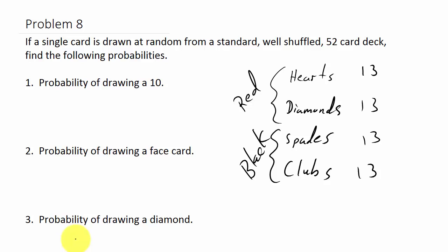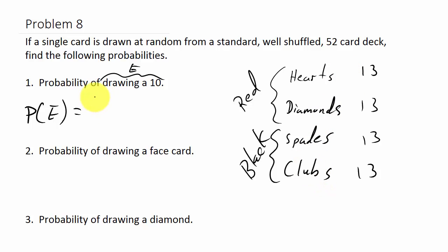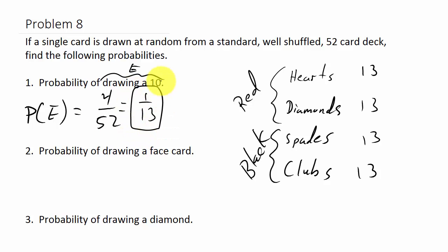What's the probability of drawing a 10? There are four tens (10 of hearts, 10 of diamonds, 10 of spades, 10 of clubs), so there are four successful outcomes out of 52 possible. That's 4/52, which simplifies to 1/13.